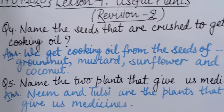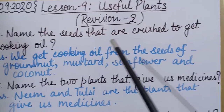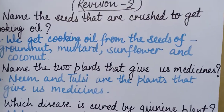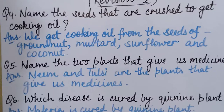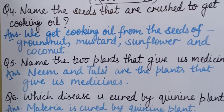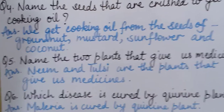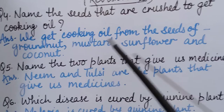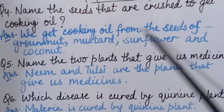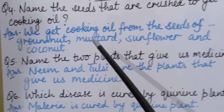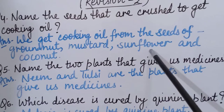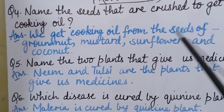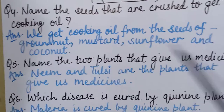Coming to the fourth question: name the seeds that are crushed to get cooking oil. We will tell the names of seeds crushed to get cooking oil. The answer is: we get cooking oil from the seeds of groundnut, mustard, sunflower and coconut.